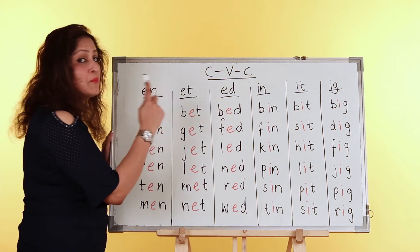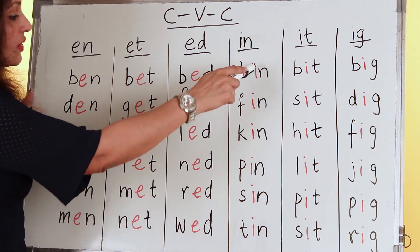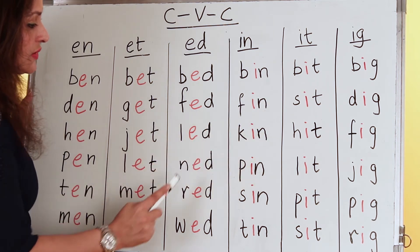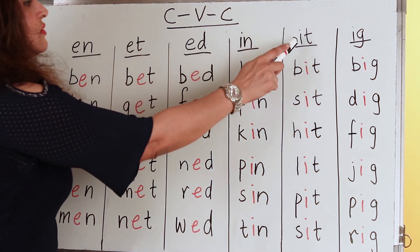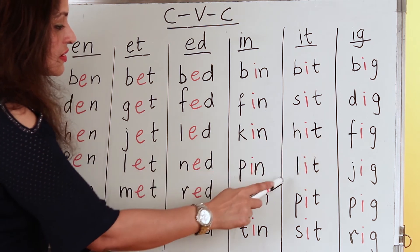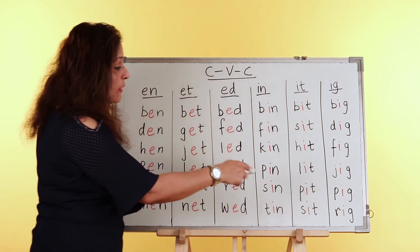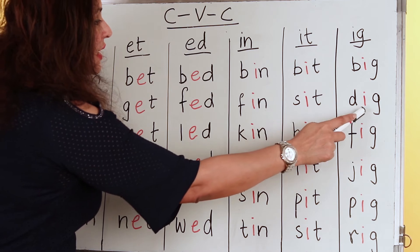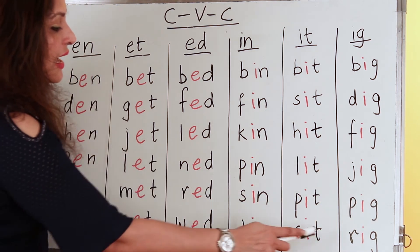I've done only three families for E — you can make more. Now the next vowel is I. The IN family has words all ending in IN: BIN, FIN, KIN, PIN, SIN, TIN. The next family is IT: BIT, SIT, HIT, LIT, FIT. You can make more words in the IT family by adding different consonants. Then we have the IG family: BIG, DIG, FIG, JIG, PIG, RIG.